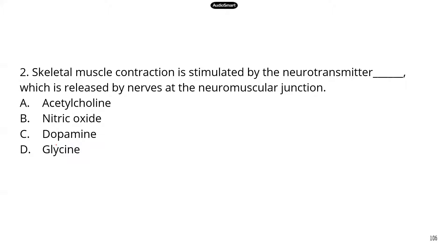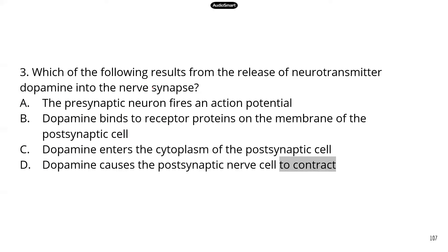Number two: skeletal muscle contraction is stimulated by the neurotransmitter acetylcholine, ACH. Number three: which of the following results from the release of neurotransmitter dopamine into the nervous synapse? You may not know exactly what dopamine does, but you can use your knowledge to go through the answers and eliminate the ones that are obviously not right.